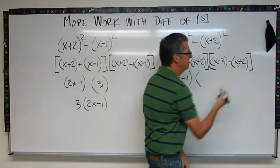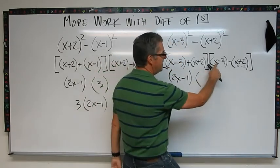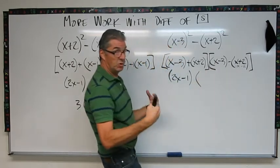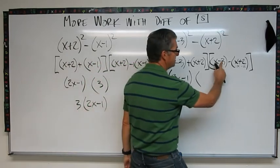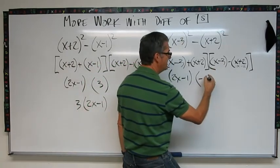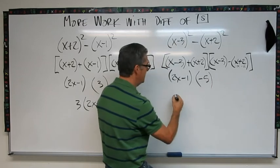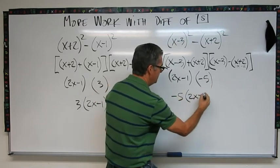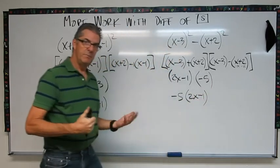So this becomes minus 5 times 2x minus 1. Bingo.